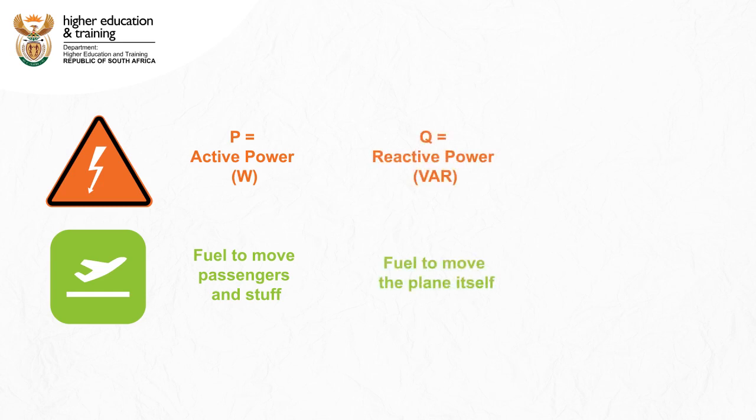Reactive power is measured in volt ampere reactive. We give it the symbol Q. If we add these two together, we get the total or apparent power needed by the circuit. We measure this in volt amperes and give it the symbol S.